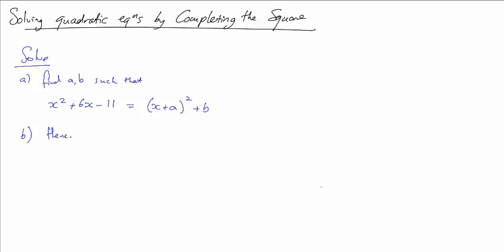Then whenever you see 'hence,' that means you've got to use that. Hence solve x squared plus 6x minus 11 equals 0. So all we have to do first is put that into the complete the square form. Remember, it starts off with x plus, because that's the sign there, half of whatever you see there, which is 3.